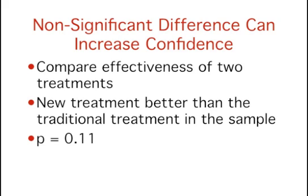One group receives the new treatment, and the other receives the traditional treatment. The mean anxiety level is lower for those receiving the new treatment than for those receiving the traditional treatment. However, the difference is not significant. The statistical analysis shows that a difference as large or larger than the one obtained in the experiment would occur 11% of the time even if there were no true difference between the treatments. In other words, the probability value is 0.11.